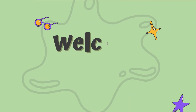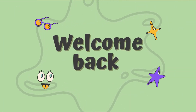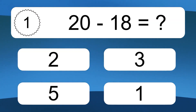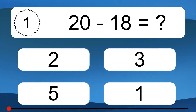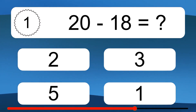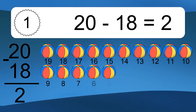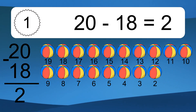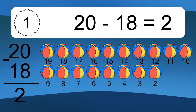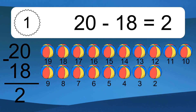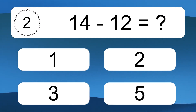Hey, and welcome to a new video! Get ready to tackle fun challenges and test your skills. Let's get started. 20 minus 18 equals what? 20 minus 18 equals 2. Let's count it: 19, 18, 17, 16, 15, 14, 13, 12, 11, 10, 9, 8, 7, 6, 5, 4, 3, 2.